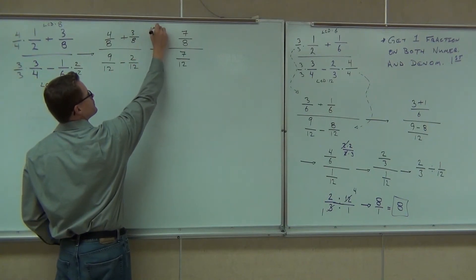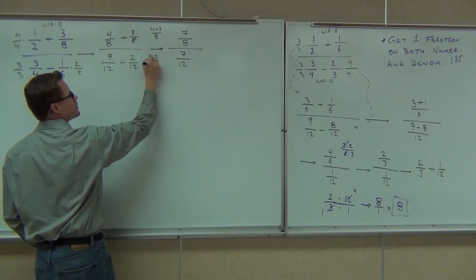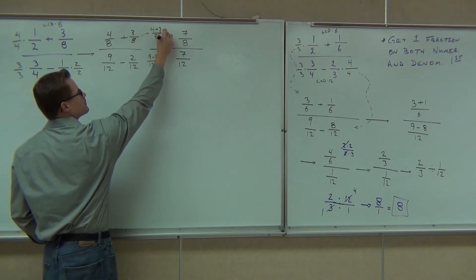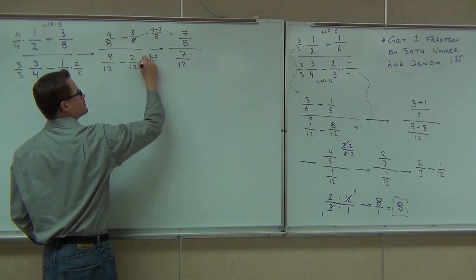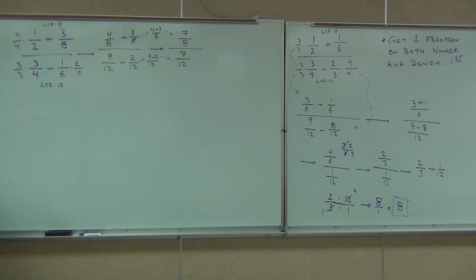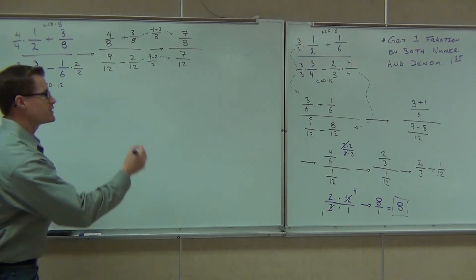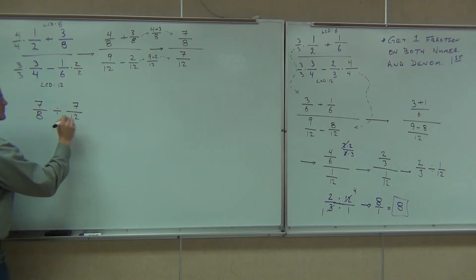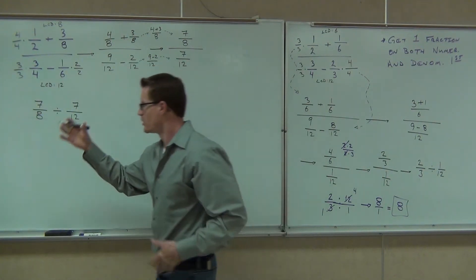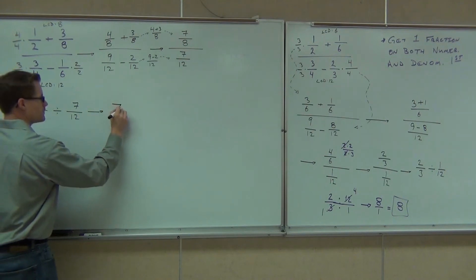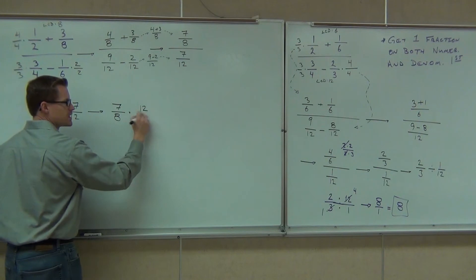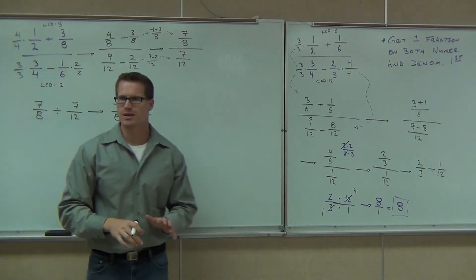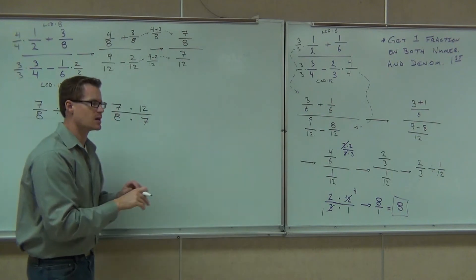Let me make sure I show the intermediate step. We have 4 plus 3 over 8, all over 9 minus 2 over 12. That gives us 7 eighths divided by 7 twelfths. Division means multiplication by reciprocals, so we're going to leave our first fraction alone — still have 7 eighths — and multiply by not 7 twelfths, but 12 over 7. We must extend this fraction bar so we know we're multiplying. We can only simplify when we have one fraction with multiplication — not addition, not subtraction.